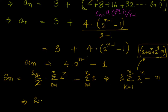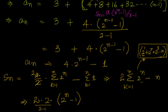For this geometric series with a = 2 and r = 2, the sum is 2·(2ⁿ − 1)/(2 − 1) = 2·(2ⁿ − 1). Therefore Sₙ = 2·2·(2ⁿ − 1) − n = 4·(2ⁿ − 1) − n.